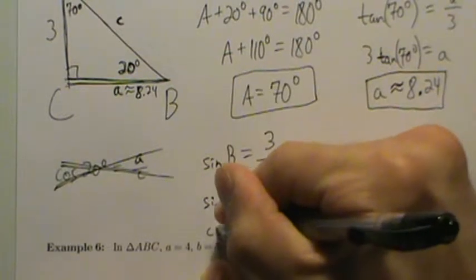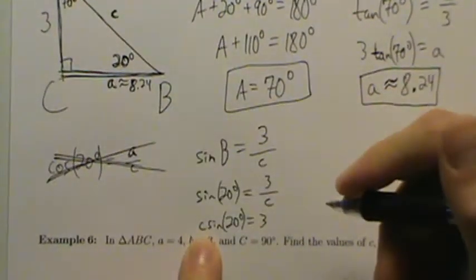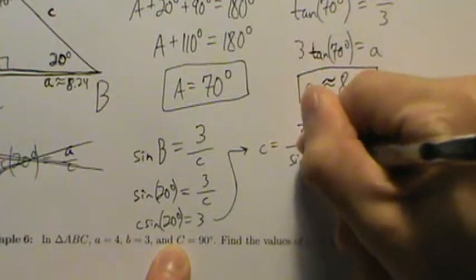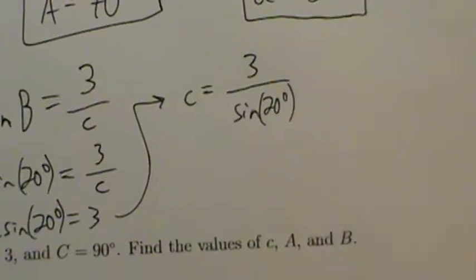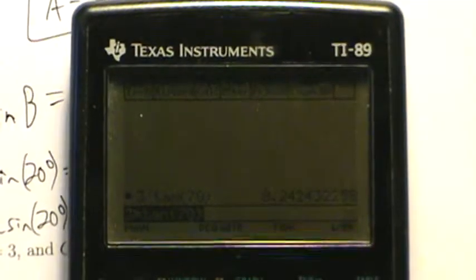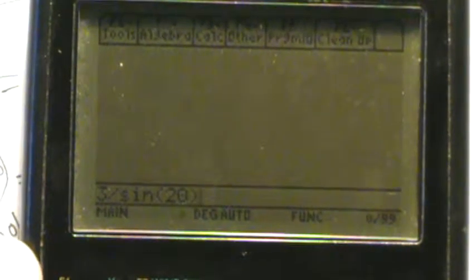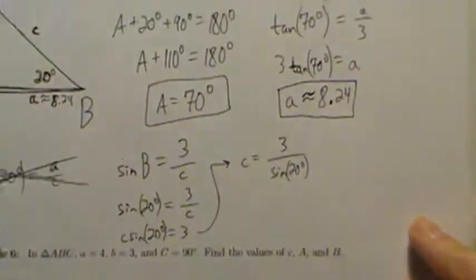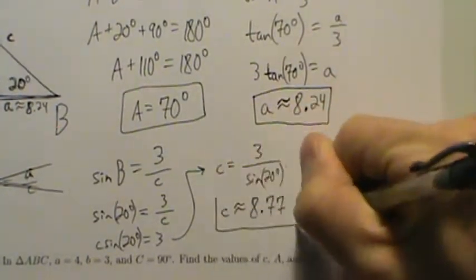Multiplying both sides by c gives c times sine of 20 degrees equals 3, and dividing both sides by sine of 20 degrees gives c equals 3 divided by sine of 20 degrees. Tossing that into a calculator — making sure we're in degree mode — 3 divided by sine of 20 degrees is approximately 8.77. So little c is approximately 8.77.